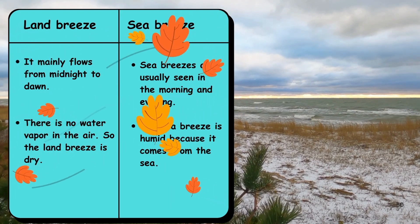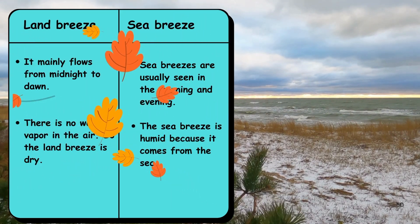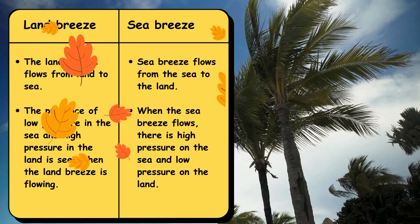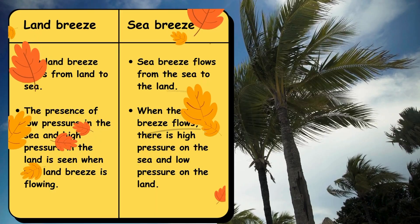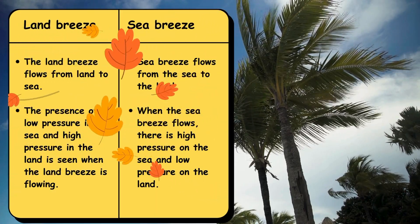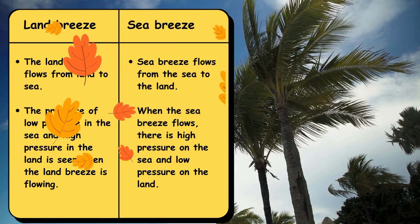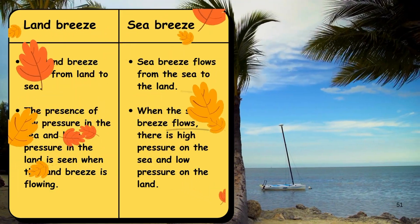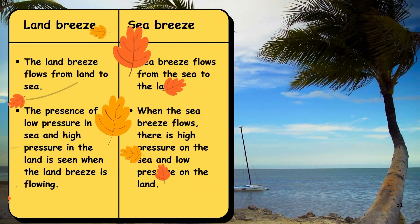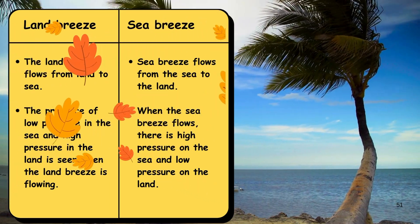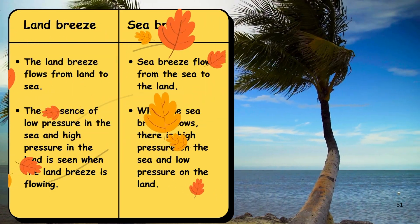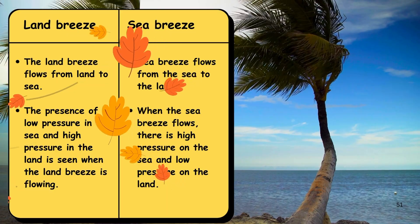Land breeze flows during midnight whereas sea breeze flows during the morning time. Land breezes are dry in nature whereas sea breezes are humid in nature. When land breeze is flowing, there is low pressure on the sea and high pressure on the land. When sea breeze flows, there is high pressure on the sea and low pressure on the land.